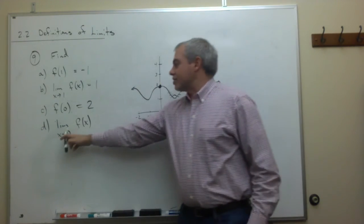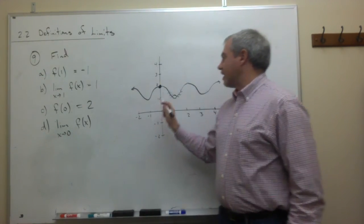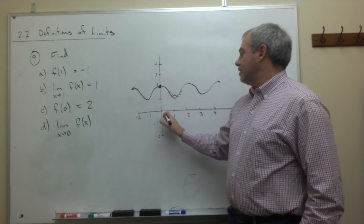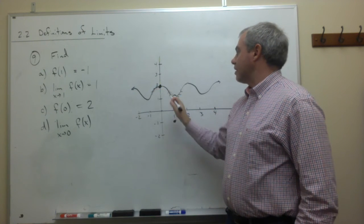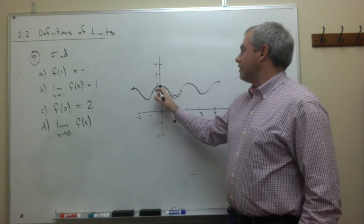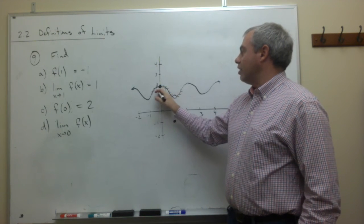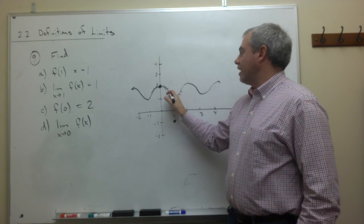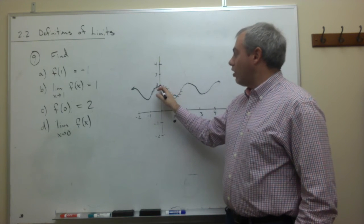And the limit as x goes to 0 of f of x says, as I come at the point 0 from the left, I'm getting close to something. From the right, I'm getting close to something. And the value of y that I'm getting close to as I come in from the left and I come in from the right is also 2.